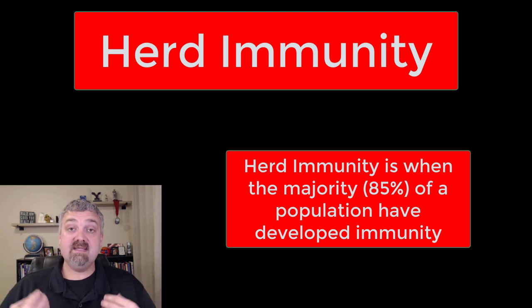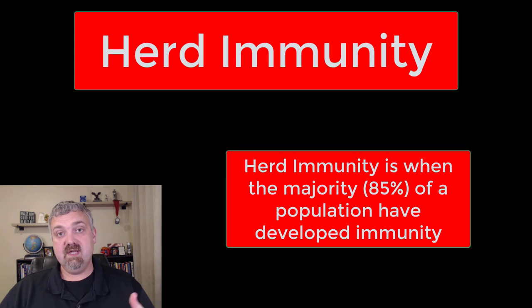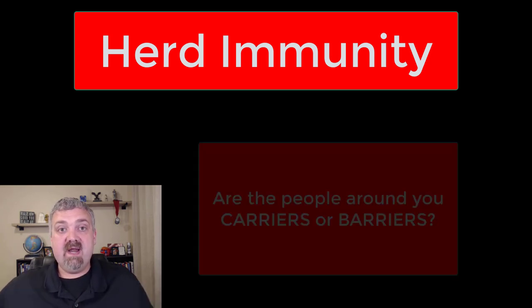The number that I always use is 85%. You're going to hear slightly different numbers, but I think that herd immunity is reached when 85% of a population is immune.